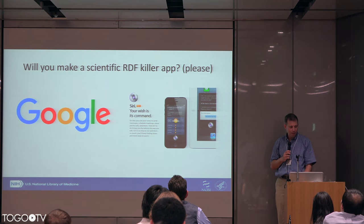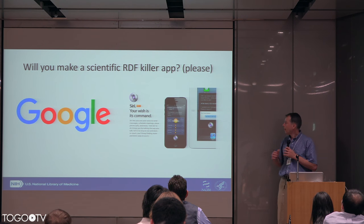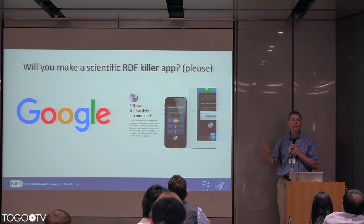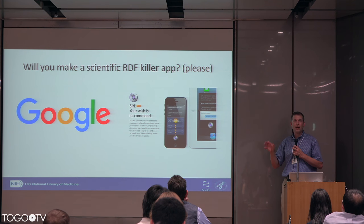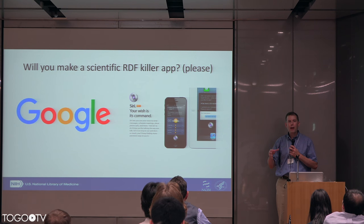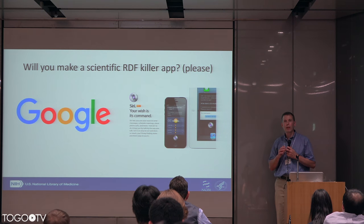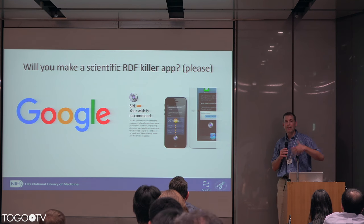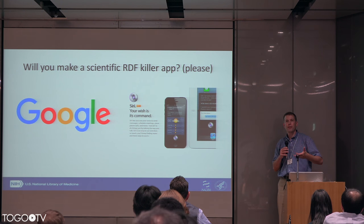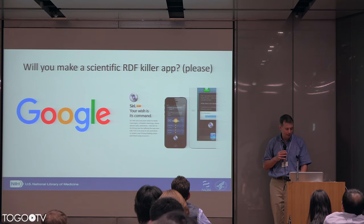We need a killer app for RDF. In some sense we already have it — it's Google, Siri, and other similar entities. This is semantic and RDF-based linked data at work. But how do we do this for science? How do we make something that people really want to use, that can take advantage of tens or hundreds of billions, if not trillions, of links between things?